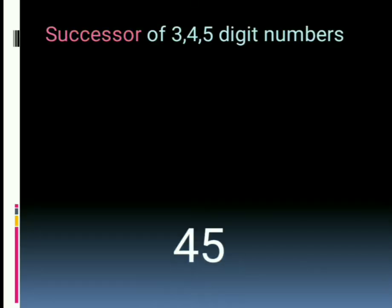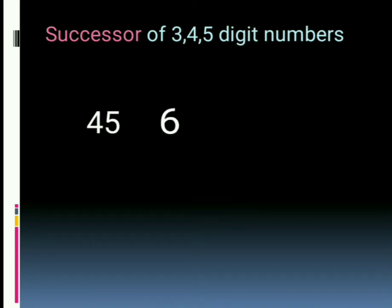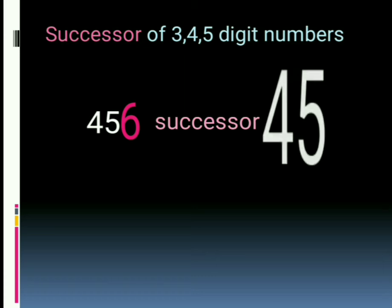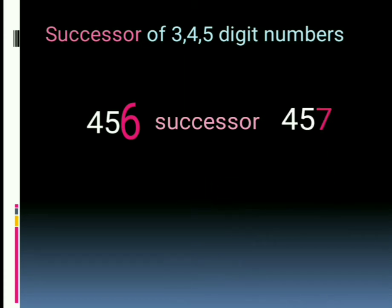Successor of three, four, five digit numbers. Four hundred fifty-six. This number is having six in the ones place, so six after seven. Successor of four hundred fifty-six is four hundred fifty-seven.